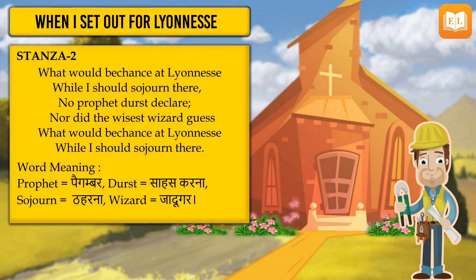Ab hum second stanza karenge. Is second stanza ko read karne se pehle, I want ki hum kuch difficult words ko samajh lein, and then hum read karein. So friends: 'bechance' ka matlab hota hai 'happen'; 'sojourn' means 'stay'; 'prophets' mean 'forecasters of the future'; and 'durst' means 'dare.'